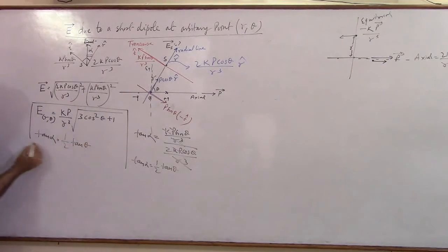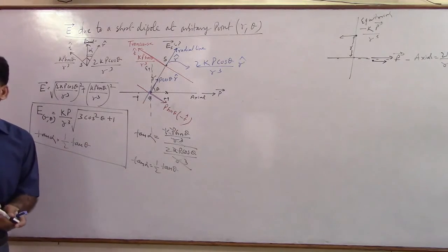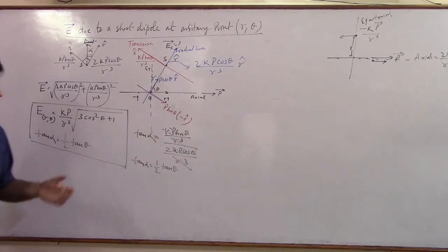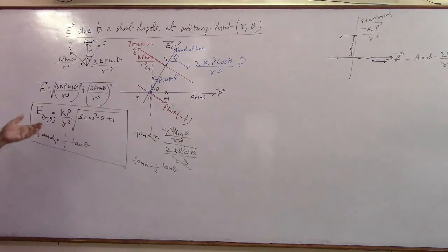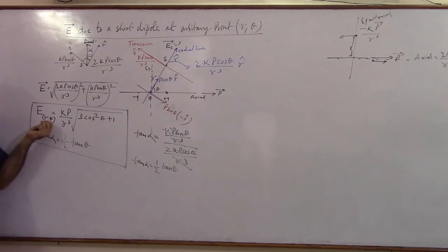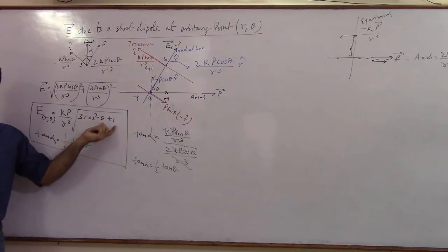So the next result is tan alpha is 1 by 2 tan theta. Now please try to appreciate this result. What it is trying to tell you? It is trying to tell you that if a point is located at a distance R from the center of dipole at some angle theta, then the magnitude of field is K P by R cube root 3 cos square theta plus 1.